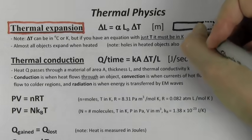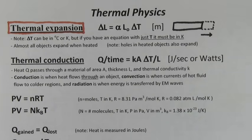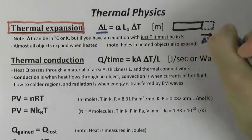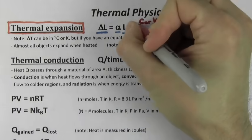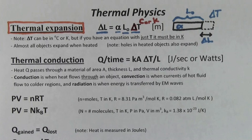When most objects heat up, they expand. You can solve for the change in length of the object using this formula. Delta L refers to the extra length created. L0 refers to the initial length. Alpha refers to the coefficient of thermal expansion for that material and Delta T refers to the change in temperature. Note that you can use Celsius or Kelvin here since this is a change in temperature.